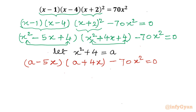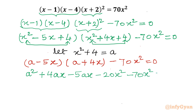So I am framing one quadratic equation in a. Now I will expand — multiply out: a² + 4ax − 5ax − 20x² − 70x² = 0. Combining the ax terms: 4ax − 5ax = −ax. And combining x² terms: −20x² − 70x² = −90x². So we get a² − ax − 90x² = 0.